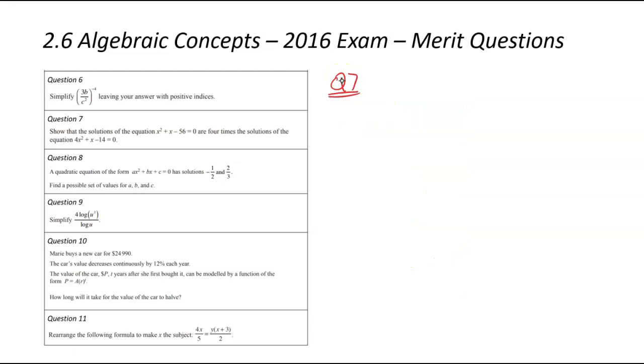We're now looking at question number seven. Show that the equations x squared plus x minus 56 equals zero are four times the solutions of 4x squared plus x minus 14. So we're trying to calculate the answers to this equation, calculate the answers to this equation, and then check if they are four times bigger. Let's burst into the first one.